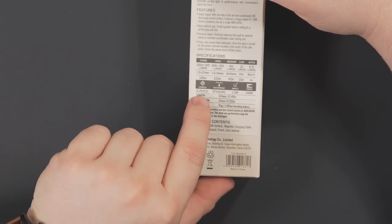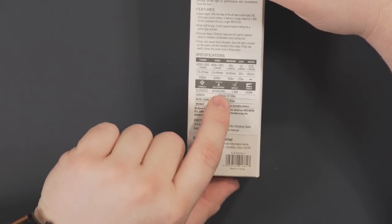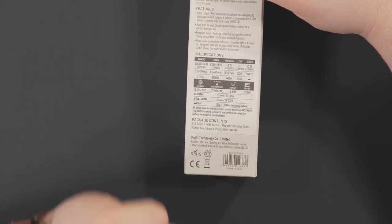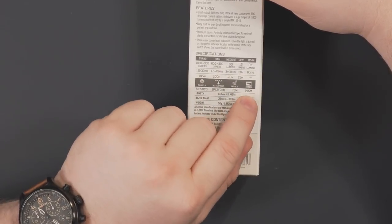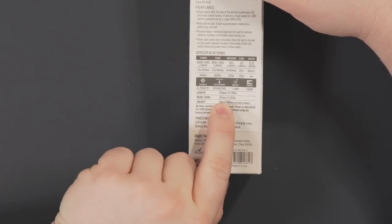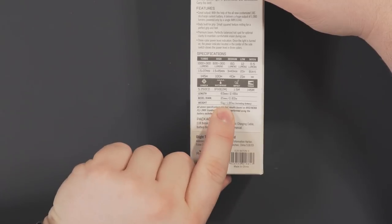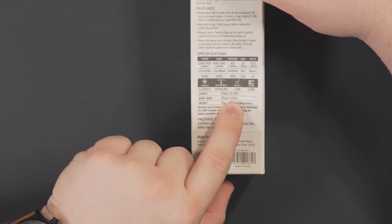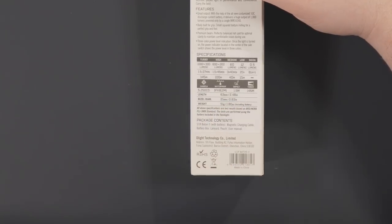And you've got a maximum beam distance of 145 meters. You've got a Candela rating of 5,250, IPX8 waterproof, meaning it can be submerged for 2 meters for up to 30 minutes. 1.5 meter impact resistance, 63 millimeters long, 21 millimeters in diameter and 51 grams. That is 2.48 inches by 0.83 inches, and it is 1.8 ounces.